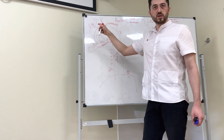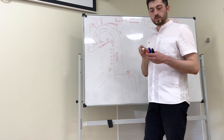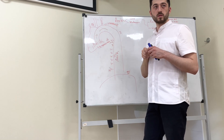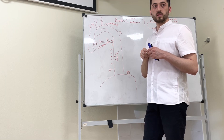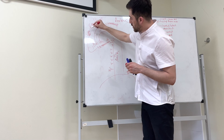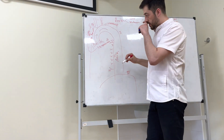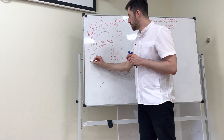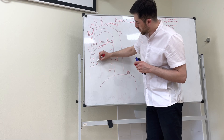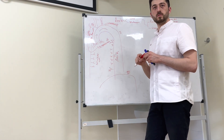The posterior intercostal arteries form anastomosis with the anterior intercostal arteries. The anterior intercostal arteries come from the internal thoracic artery, which is a branch of the subclavian artery. The internal thoracic artery gives the anterior intercostal arteries, forming anastomosis with the posterior intercostal arteries.